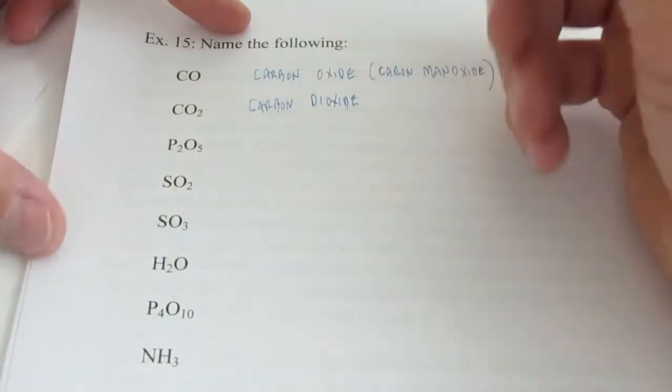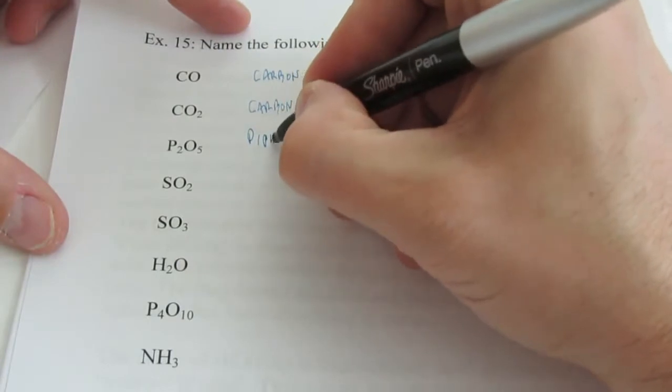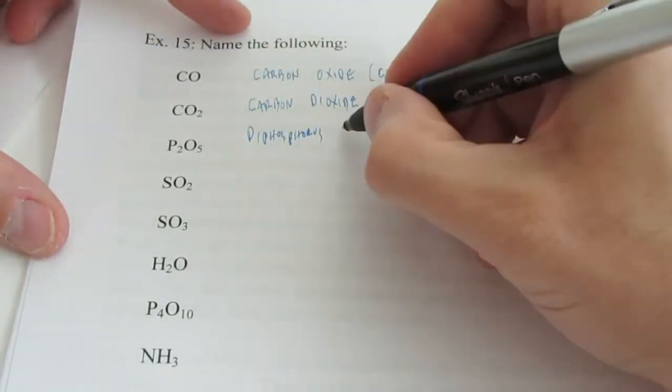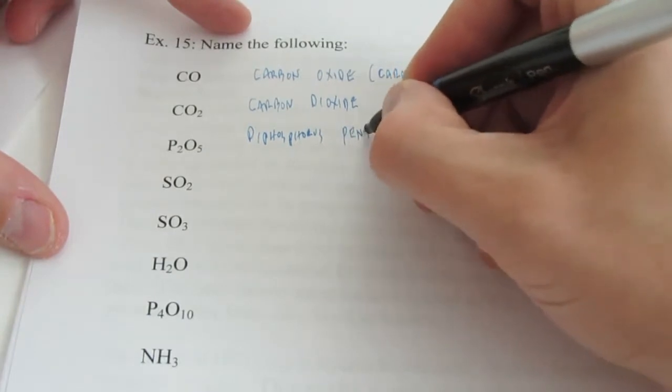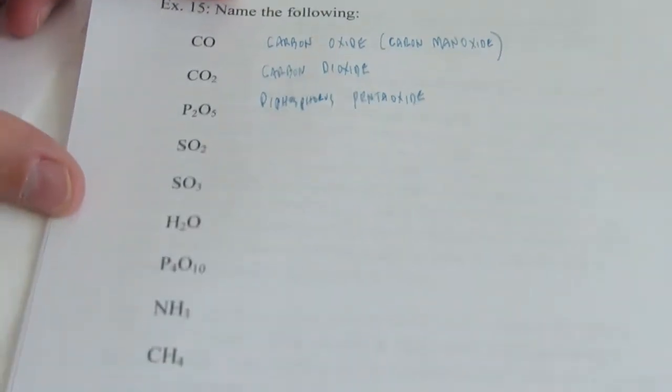Now I'm checking to make sure that these are both nonmetals before I start using my prefix. And both phosphorus and oxygen are so I can use those prefixes. I have diphosphorus and then five. The prefix for that is pentaoxide. If you want to say pentoxide, I would be okay with that.